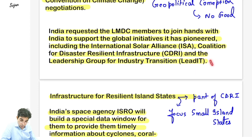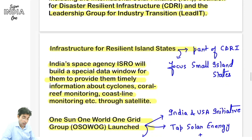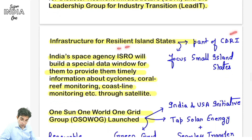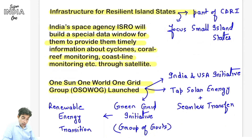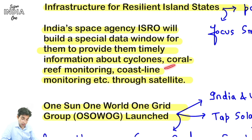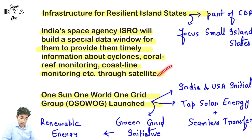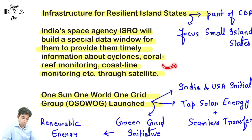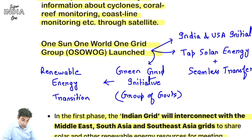Yeh keywords answer mein dikhne chahiye: LMDC, ISA, CDRI, LEED IT, infrastructure for resilient island states. Answer mein English kam likhna hai aur jo poocha gaya hai usse related keywords zyada dikhne chahiye. ISR satellite mapping aur data provide karega - ek window dega taki timely information mile, cyclone ka, coral reef ki monitoring ho, coastline monitoring ho through satellite. Toh hum antariksh se hi monitor kar lenge ki disaster kahan aa rahi hai aur quickly unko warn kar denge - yeh India ne promise kiya.